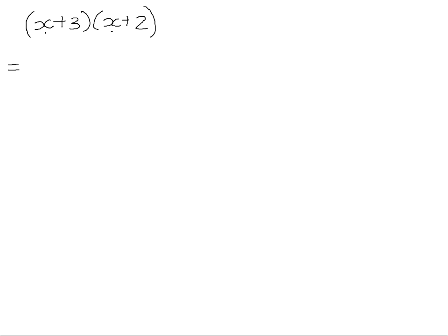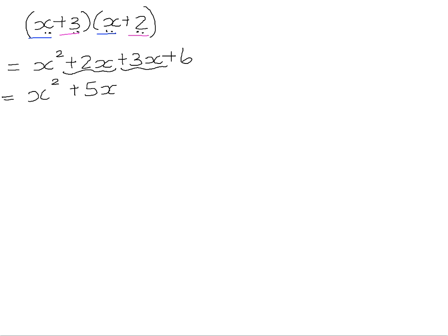So let's have a look and see. If we multiply x times x, we get x squared. x times positive 2 is positive 2x. Positive 3 times x is positive 3x, and positive 3 times positive 2 is positive 6. Because these binomials had like terms in corresponding positions, the middle terms of our trinomial will be like terms. So positive 2x and positive 3x add up to positive 5x, and that is the fully simplified trinomial.